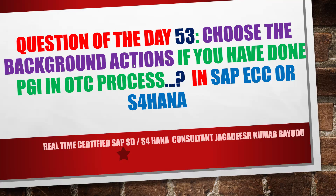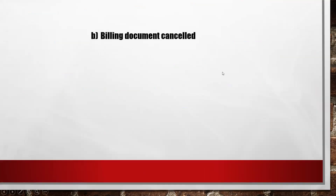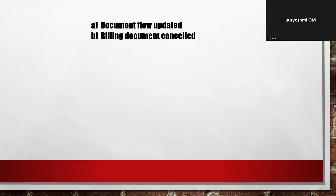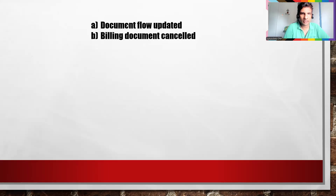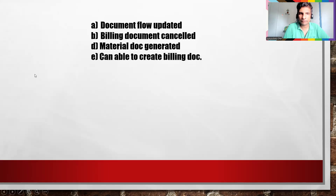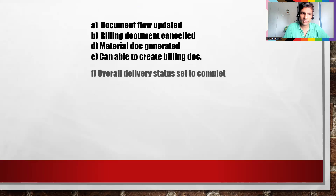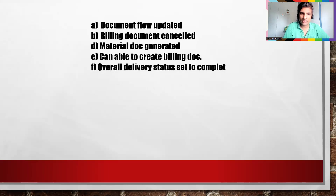Let's try to read through the options one by one. Option A is document flow updated. Option B is billing document cancelled. Option D is material document generated. Option E is able to create billing document. Option F is overall delivery status set to complete. And PGR auto updated. And all of the above.